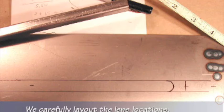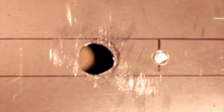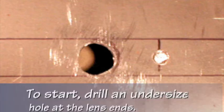We carefully layout the lens locations. A half-inch square steel tube helps assure straightness. To start, drill an undersized hole at the lens ends.